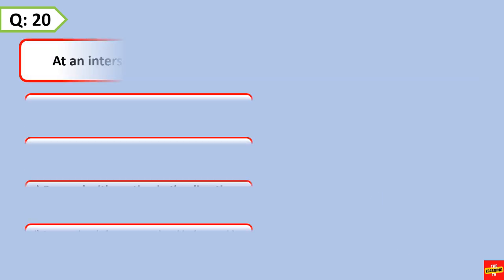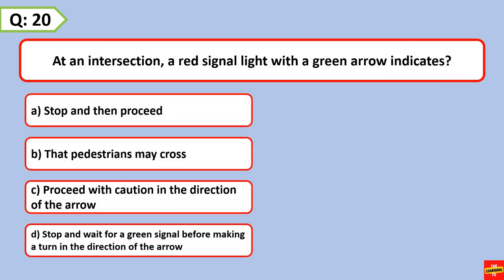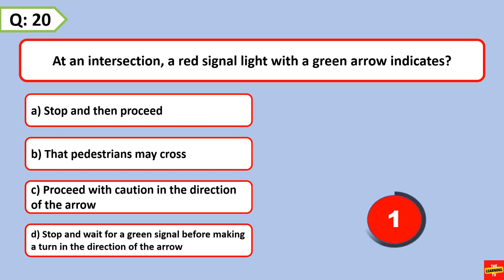At an intersection, a red signal light with a green arrow indicates: stop, then proceed with caution in the direction of the arrow.